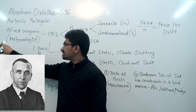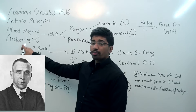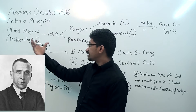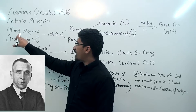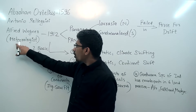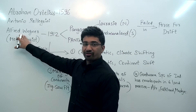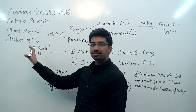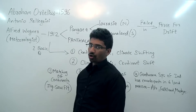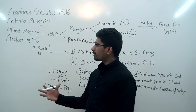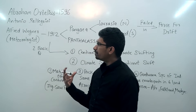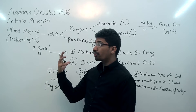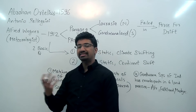Now, you will notice that I have written 'meteorologist' below Alfred Wegener's name. That means he was a meteorologist. You will think that a meteorologist is supposed to check the weather — so how did he observe this thing about continents?